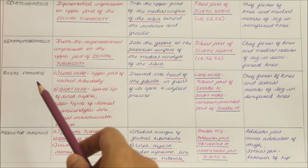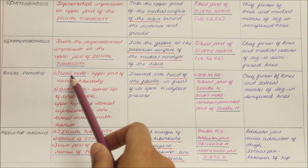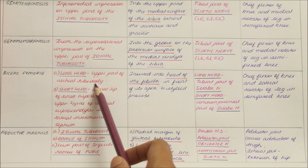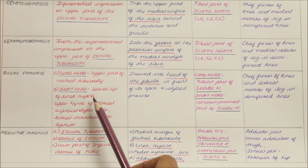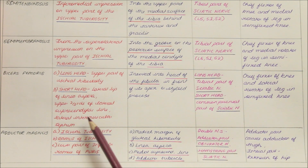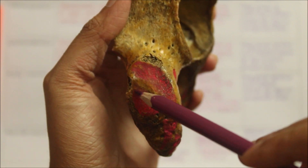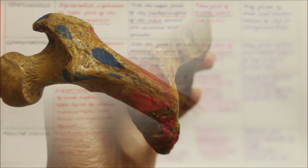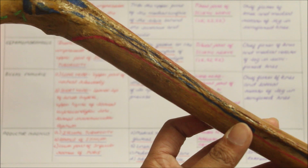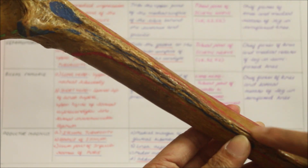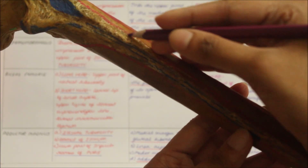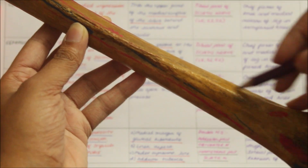Next we have the biceps femoris. It has two heads: a long head and a short head. The long head originates from the inferomedial aspect of the upper part of the ischial tuberosity in common with the semitendinosus muscle, right here. This is the right femur and this is the linea aspera. The short head originates from the lateral lip of the linea aspera between the insertion of the adductor magnus and the origin of the vastus lateralis, and also from the upper two-thirds of the lateral supracondylar line, extending from here to here.